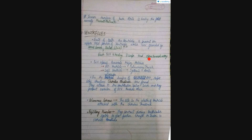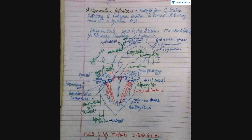Papillary muscles are present within the ventricular wall and contract during ventricular systole, providing strength to the cusps. However, papillary muscles are not directly attached to the cusps of the valves; they are connected by rope-like structures known as chordae tendineae. The chordae tendineae attach to the ventricular valve cusps and prevent the eversion of the atrioventricular valve.